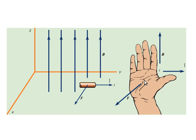And once again, the palm of the hand is going to point in the direction of the force on that wire. So we've got our current, our magnetic field, and our force at right angles to one another.